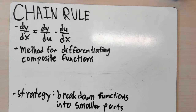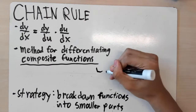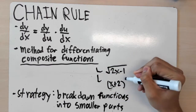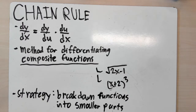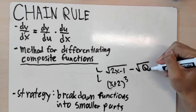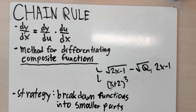Chain rule is essentially the method for differentiating composite functions, such as the square root of 2x minus 1, or (x plus 2) raised to the third. A composite function is a composition of two functions — for example, the square root of a quantity composed with the function 2x minus 1. What chain rule states is that dy/dx is equal to dy/du times du/dx.